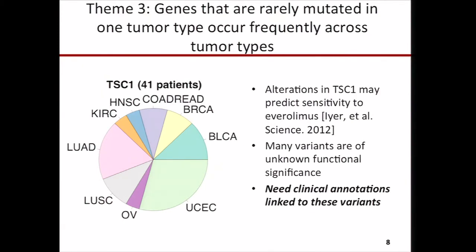Theme three: genes that are rarely mutated in one tumor type occur frequently when considered across several tumor types. TSC1 alterations may predict sensitivity to mTOR inhibitors, at least in bladder cancer, as demonstrated by David Solit at Memorial Sloan-Kettering. Having a clinical trial in only one tumor type is not feasible, but if you look at TSC1 mutation status across tumor types, you can imagine a basket trial. These so-called basket trials are emerging, and this is just one example where genes rarely mutated within one tumor type become frequently mutated across tumor types.